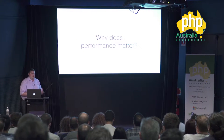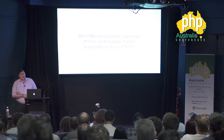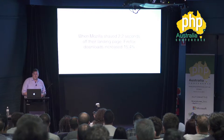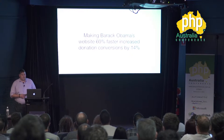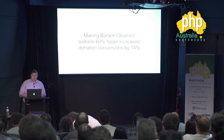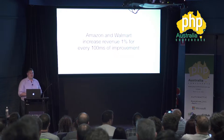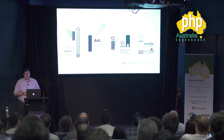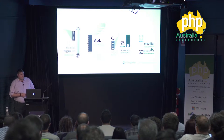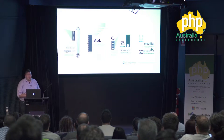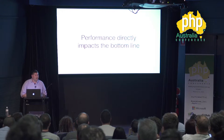Why does performance matter? Microsoft found that Bing searches two seconds slower resulted in a 4.3% drop in revenue per user. When Mozilla shaved 2.2 seconds off their landing page, Firefox downloads increased 15.4% — that's 16 million more downloads. Making Barack Obama's website 60% faster increased donation conversions by 14%. Most impactfully, Amazon and Walmart increased revenue by 1% for every 100 milliseconds shaved off end user experience time. All leading tech companies treat performance as a feature.